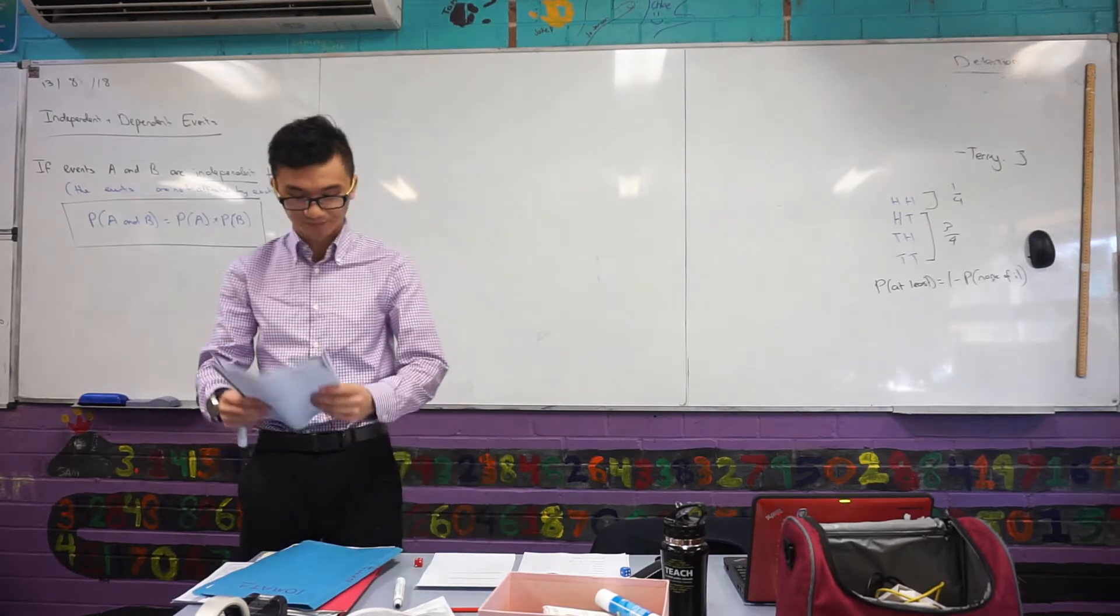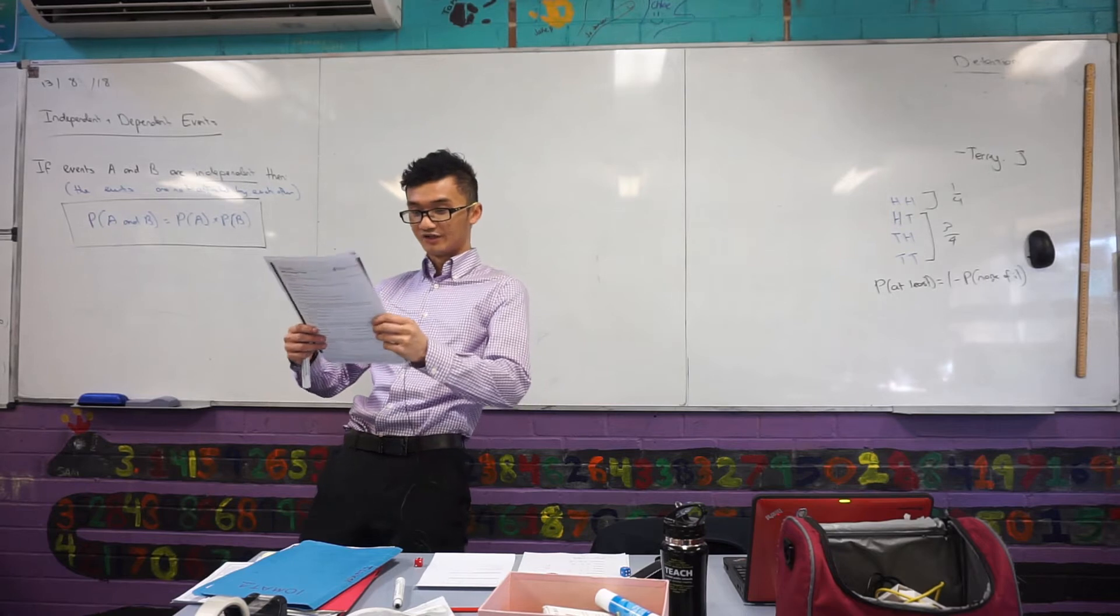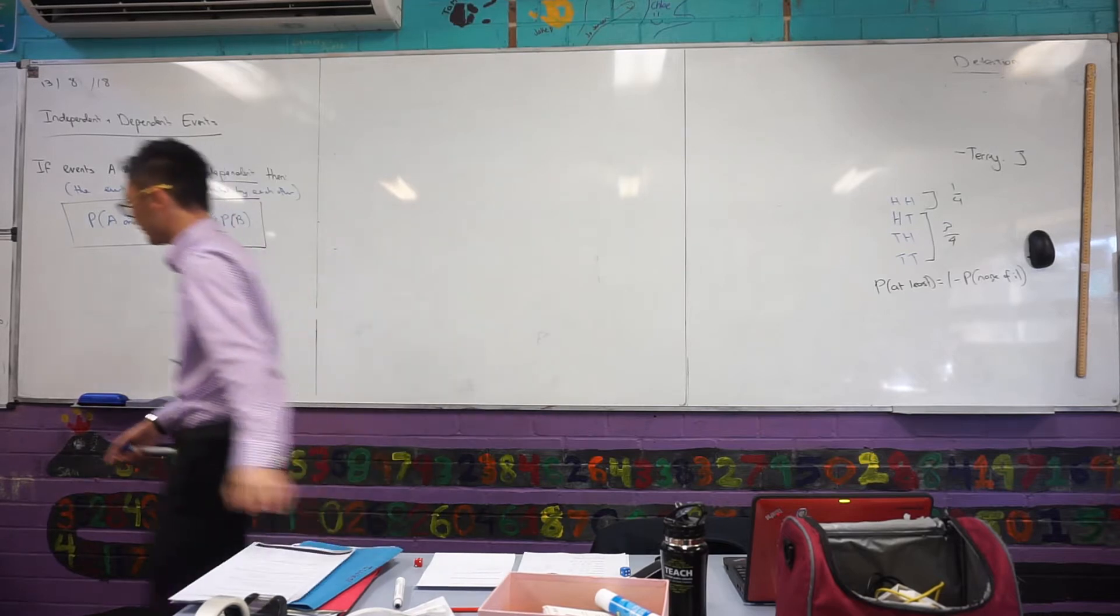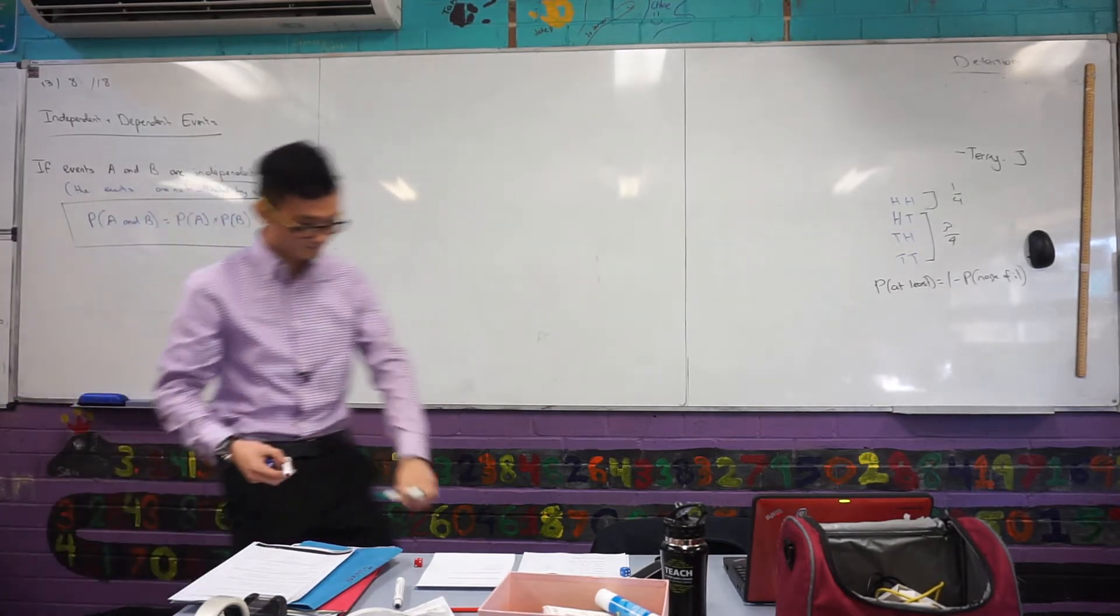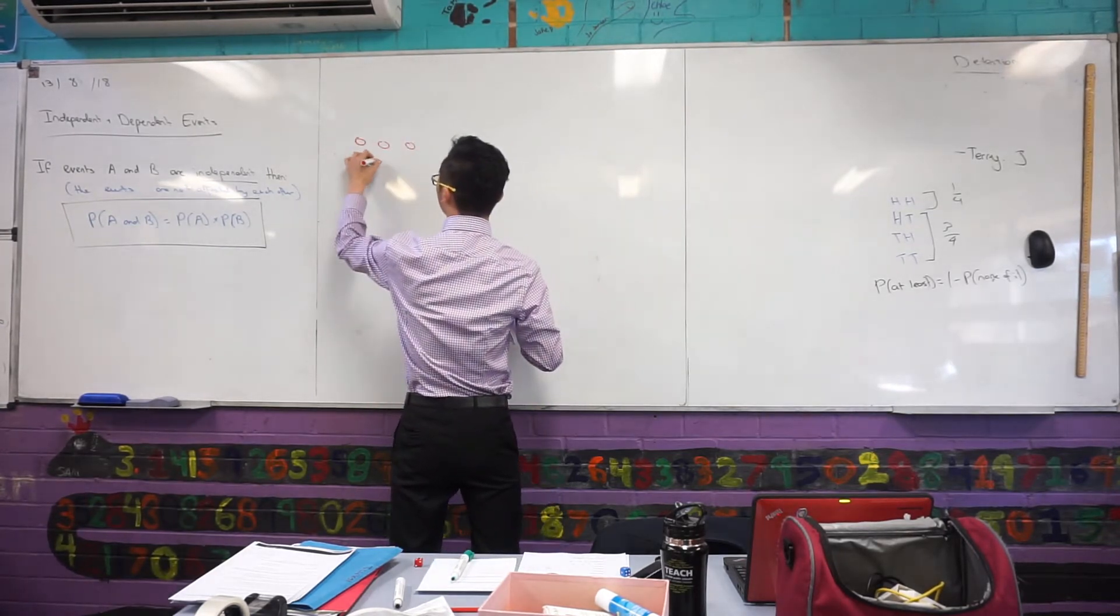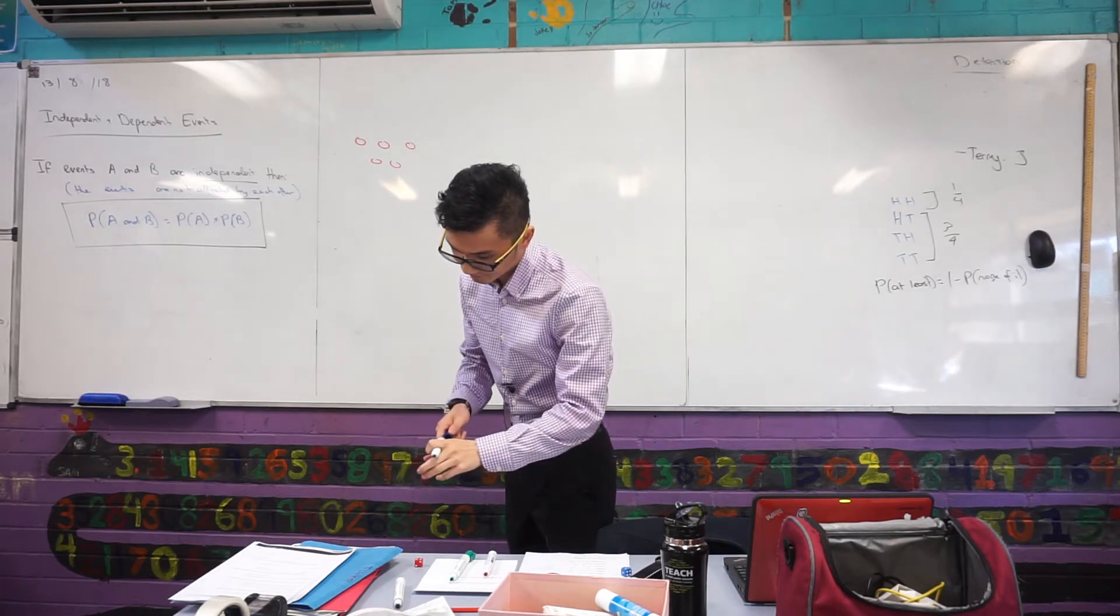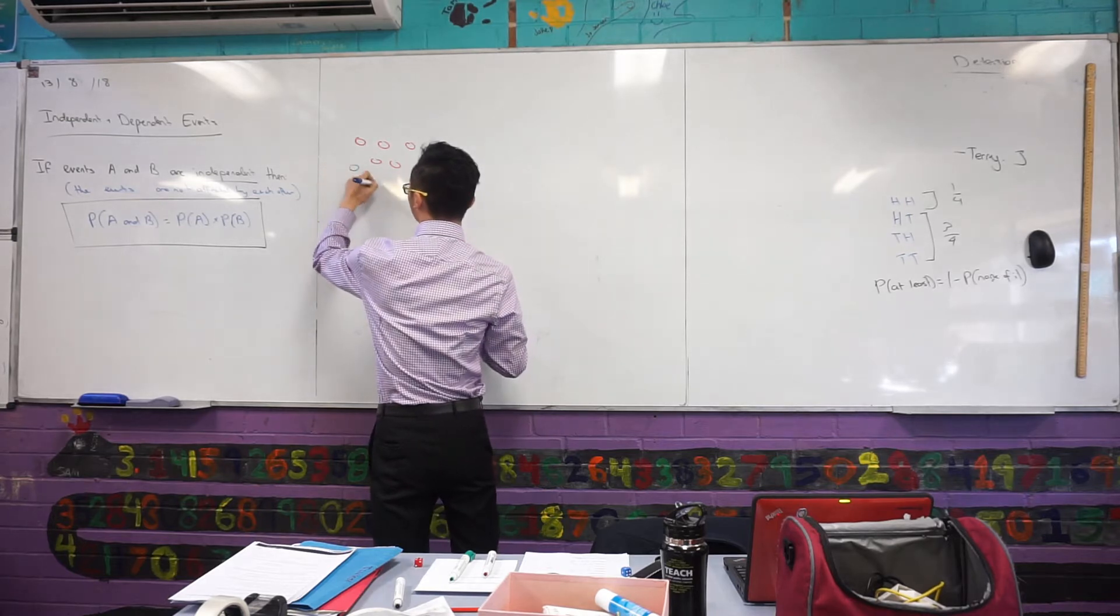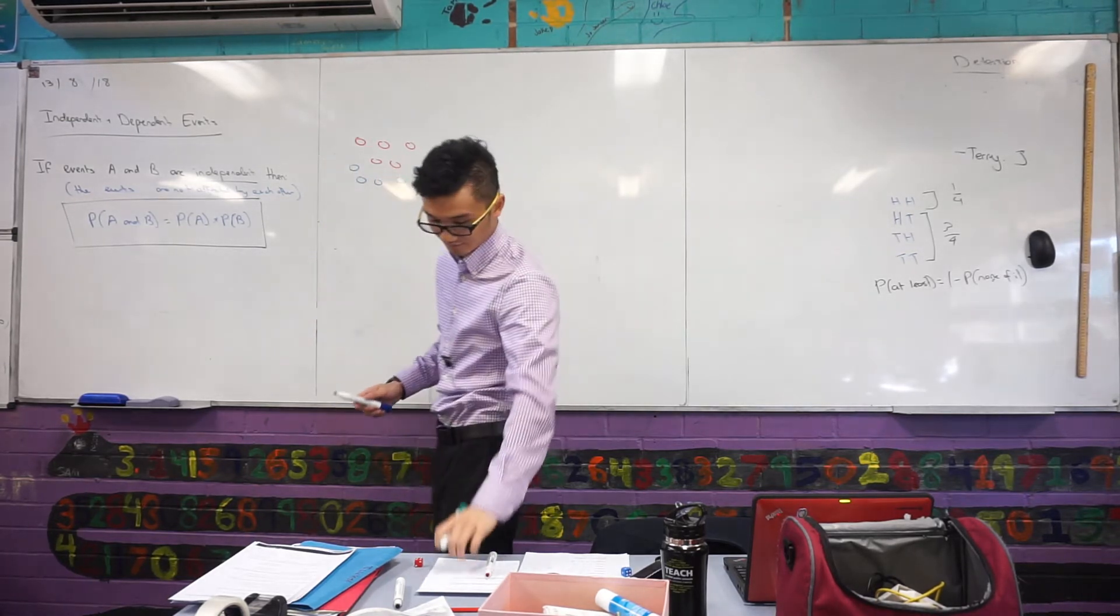Let's look at a quick example. Can I get you, Ben, to read out on independent events? Question 5. A bag holds five red, three blue and two green counters. The counter is selected at random. It's colour noted and it is then replaced. The second counter is then selected at random.